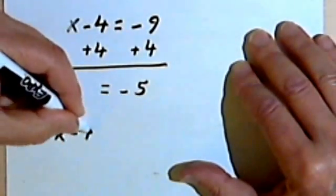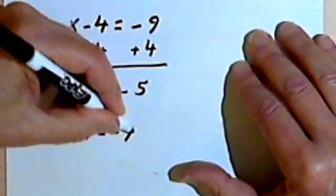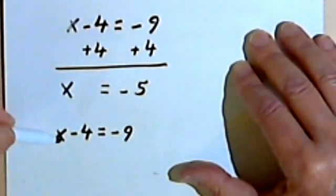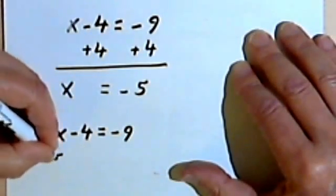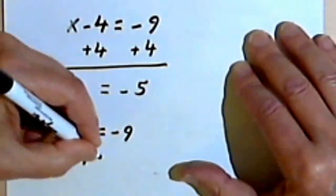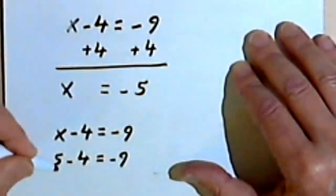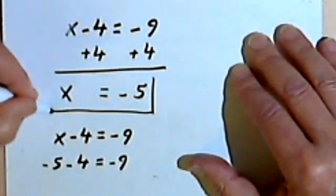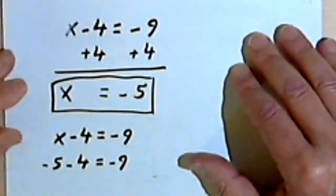So I've got x minus 4 equals negative 9. Let's take that negative 5 and put it where the x is. So negative 5 minus 4 equals negative 9. And negative 5 minus 4 does equal negative 9. So this answer is right.